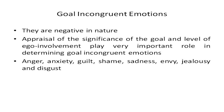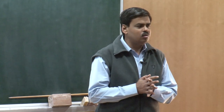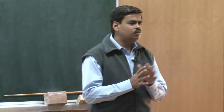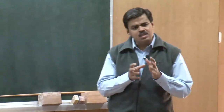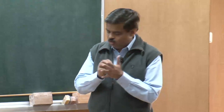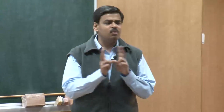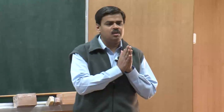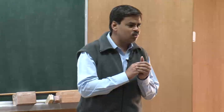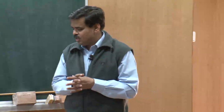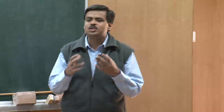Having discussed the goal congruent emotions—happiness, love, and pride—today we are going to talk about the goal incongruent emotions. In the beginning we established that goal congruent emotions are primarily positive, whereas goal incongruent emotions are negative in their orientation. The goal relevance, goal congruence, and ego involvement all played important roles as appraisal denominators for the first three emotions.